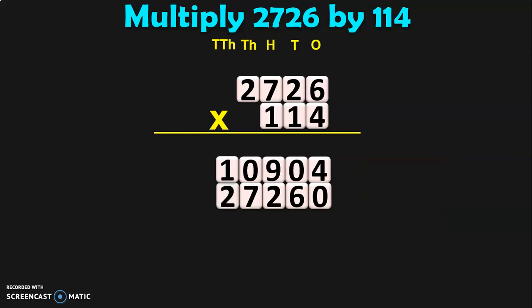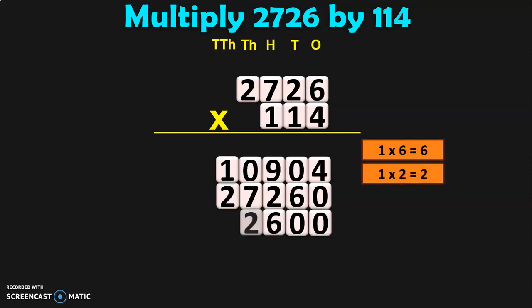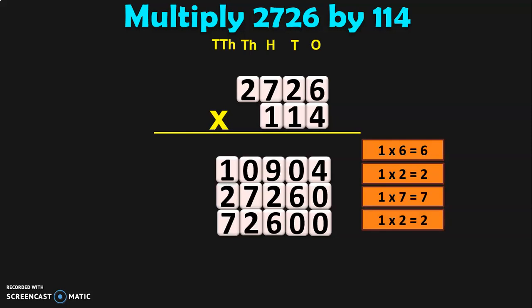The next step is to multiply 2726 by 100, because the third digit is also a 1 which is in the 100s place. So, actually what we are doing is multiplying 2726 by 100. To indicate that, we will have to add 2 zeros: one in the 1s place, another 0 in the 10s place. Then, as usual, start multiplying: 1 into 6 is 6, 1 into 2 is 2, 1 into 7 is 7, and 1 into 2 is 2. This 2 will now be written in the lakhs place, because we are multiplying 1 in the 100s place by 2 in the 1000s place — 100 into 2000 gives you 2 lakhs. So, automatically the number moves to the lakhs place value.